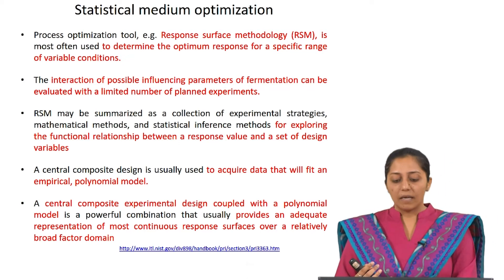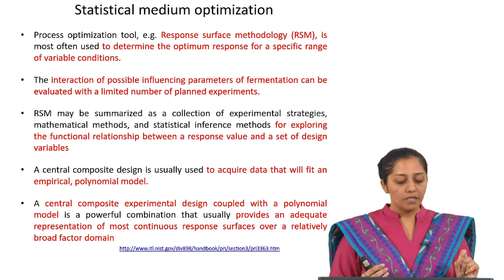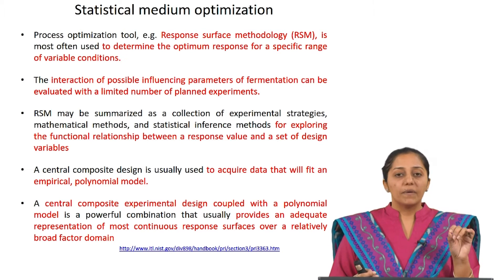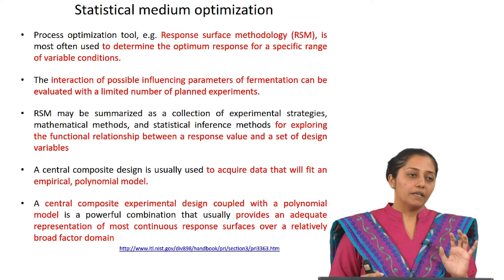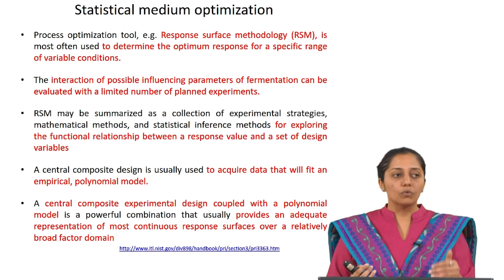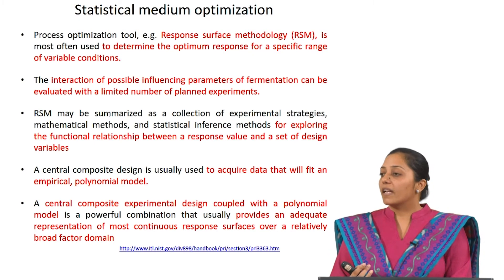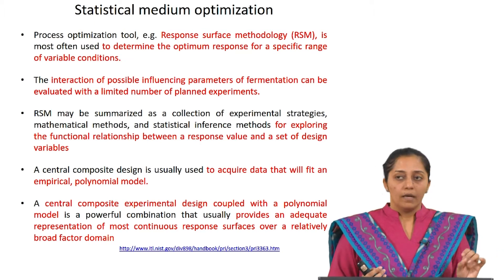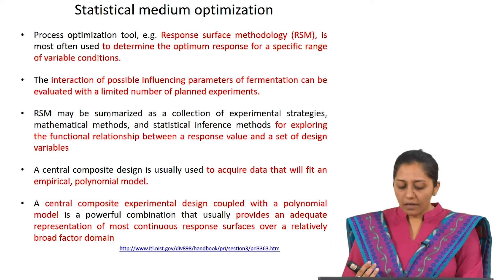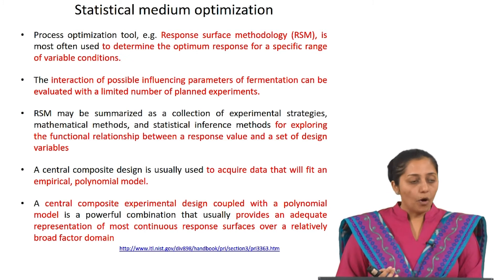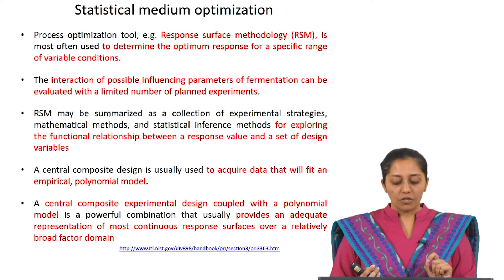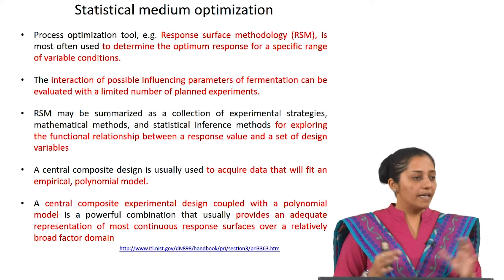RSM may be summarized as a collection of experimental strategies, mathematical methods, and statistical inference for exploring the functional relationship between a response value and a set of design variables — therefore it is a polynomial. A central composite design, one of the tools in RSM, is usually used to acquire data that will fit an empirical polynomial model. Empirical means there is no scientific basis to it. A central composite experimental design coupled with a polynomial model is a powerful combination that usually provides an adequate representation of most continuous surfaces over a relatively broad factor domain.